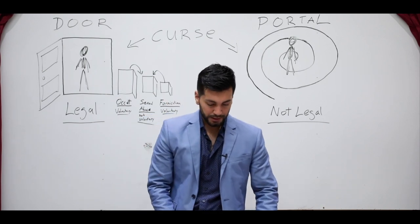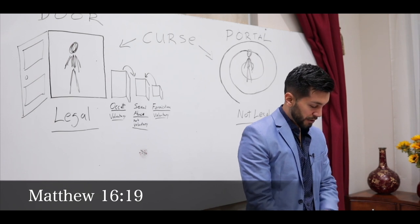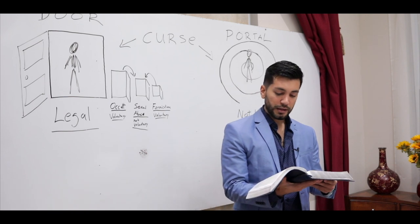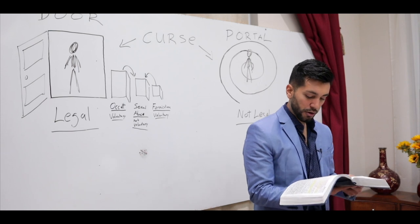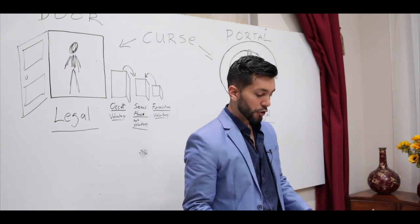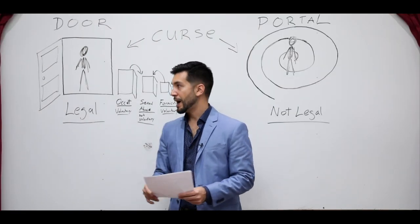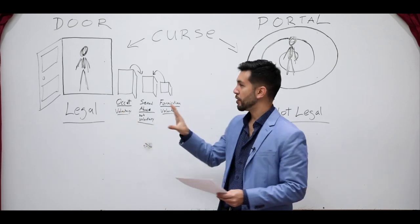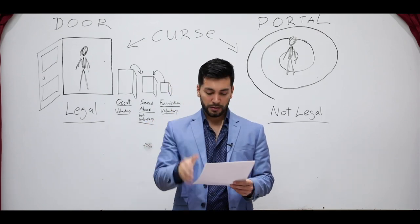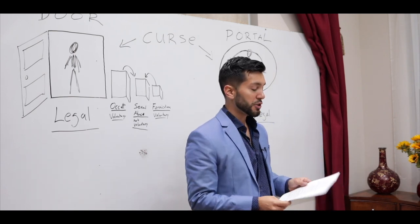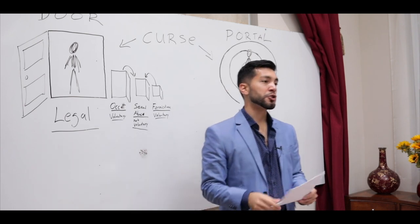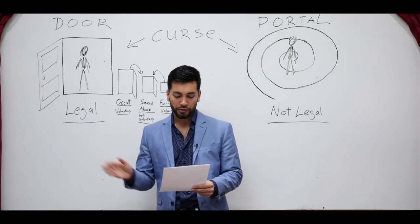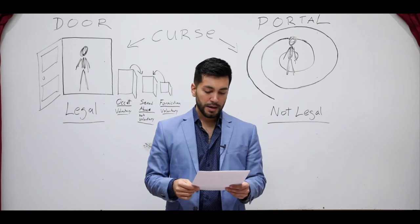Let us go to Matthew 16, verse 19, because the Lord gave us authority over these things: 'And I will give you the keys of the kingdom of heaven. And whatever you bind on earth will be bound in heaven, and whatever you loose on earth will be loosed in heaven.' The door is closed through specific confessions. So when you're dealing with somebody that has an open door, they have to confess their sins — specifically confess. What they know that has caused the door to open has to be specific and has to be a genuine repentance. That's why the true gospel of repentance for the remission of sins is very important — so they understand they have to go and sin no more, so the door is closed. Because if it's not closed, then the demon will enter again.